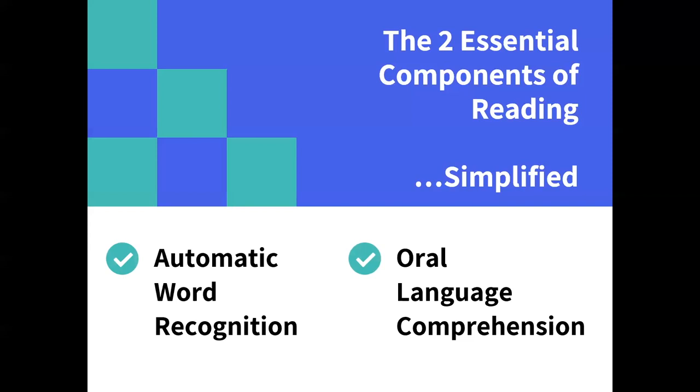Let's take a closer look at these essential components. Our first component is automatic word recognition. I want to really point out that this has to be automatic word recognition, not simply decoding, because we want those words mapped for automaticity in the visual word form area — we'll talk more about that in another video. To show you what I mean, I want to show you what it's like to look at words that you have mapped to your visual word form area and see how you cannot suppress those.